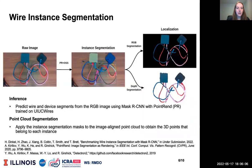The trained model is used to predict object instance bit masks on the RGB image. Then the instance segmentation masks are applied to the image-aligned point cloud to obtain the 3D points belonging to each object in the scene.